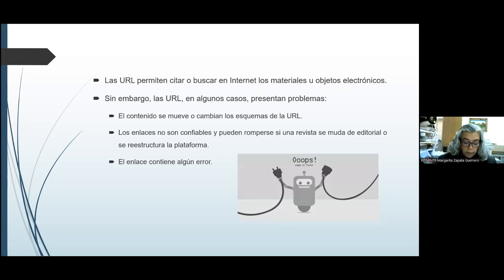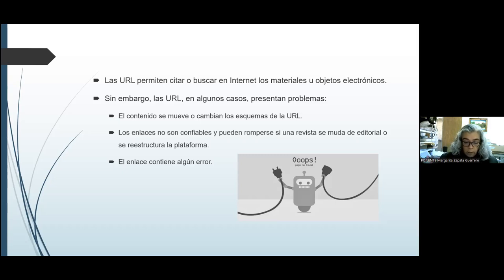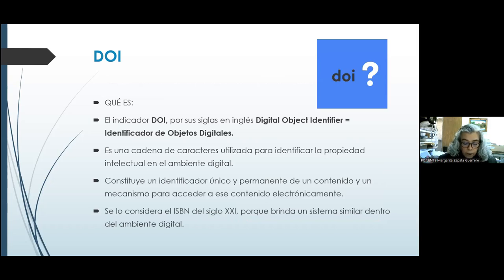Las URL permiten citar o buscar en Internet estos materiales u objetos electrónicos. Sin embargo, las URL en algunos casos presentan algunos problemas. Por ejemplo, que los enlaces no son confiables y que pueden romperse si una revista se muda de editorial o se reestructura su plataforma. El enlace puede contener algún error. Debido a esto, el sector editorial pensó en crear una forma para la identificación de estos documentos y evitar los problemas antes mencionados.